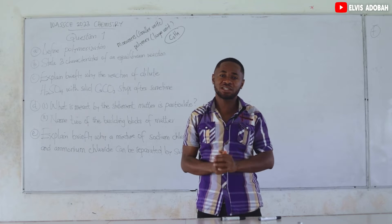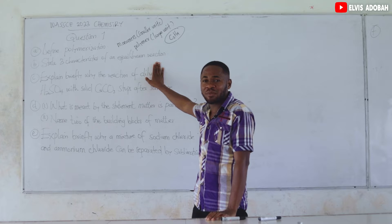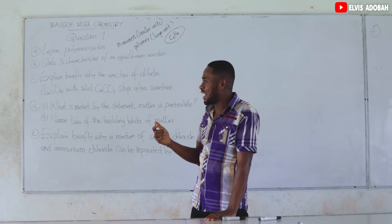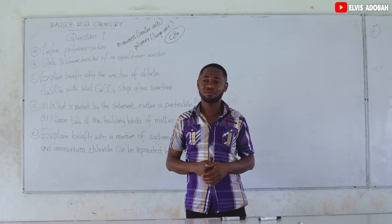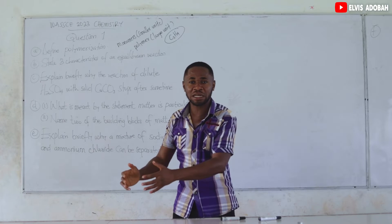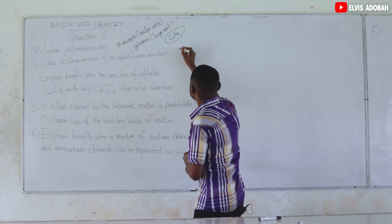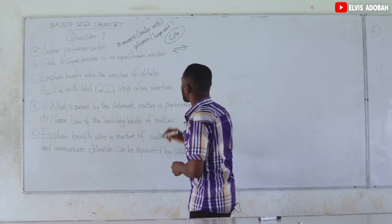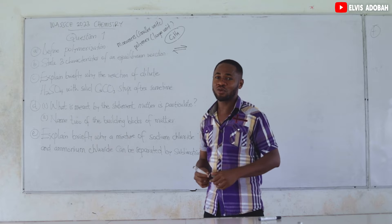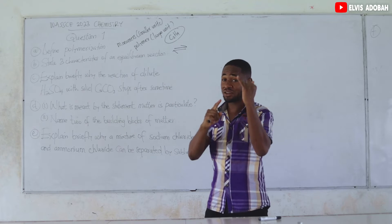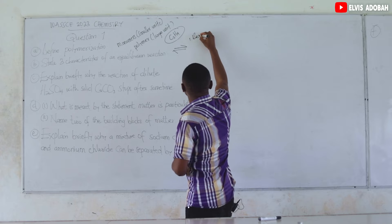Characteristics of equilibrium reactions — this falls under the topic chemical equilibrium. When you study chemical equilibrium, the first thing you learn is that equilibrium reactions are always reversible reactions. That means the reactants combine to form products, and the products break down back again to form reactants. You see a symbol with a forward and backward arrow separating the reactants and the products. Characteristic one: the reactions are reversible.